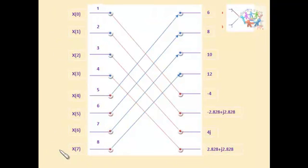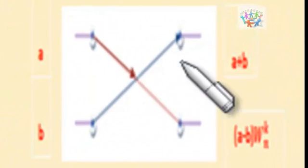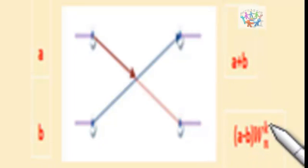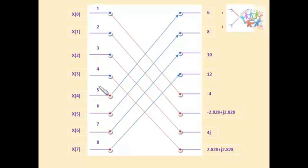We take the input in the actual order and write the twiddle factors at the bottom of each X. For the first X, the twiddle factors are W8⁰, W8¹, W8², and W8³. Using the DIF method, the top part of the X is A + B and the bottom part is (A − B) × twiddle factor. For the first X with values 1 and 5: top = 1 + 5 = 6; bottom = (1 − 5) × 1 = −4. Repeat the same calculation for the remaining 3 X's.